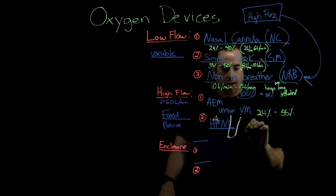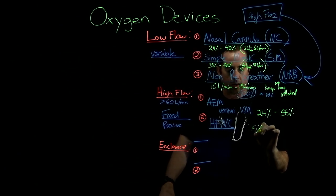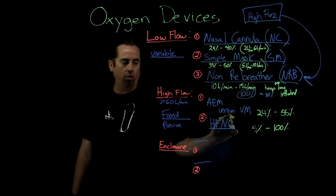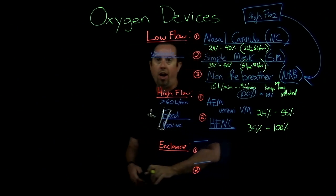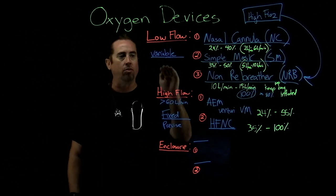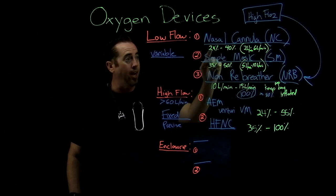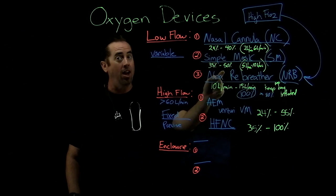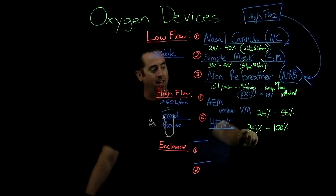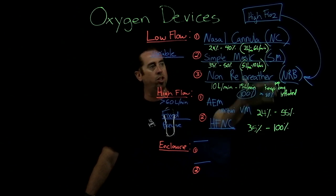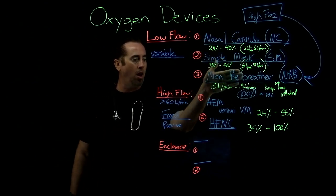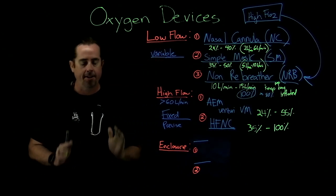High flow nasal cannula can achieve 35% to 100% FiO2 — and it is fixed and precise. To summarize the progression: low flow devices are variable FiO2; high flow devices provide fixed, precise FiO2. The coverage ranges are: nasal cannula low to mid, simple mask mid, non-rebreather high FiO2; then air entrainment mask low-to-mid and high flow nasal cannula mid-to-high — precise and fixed.